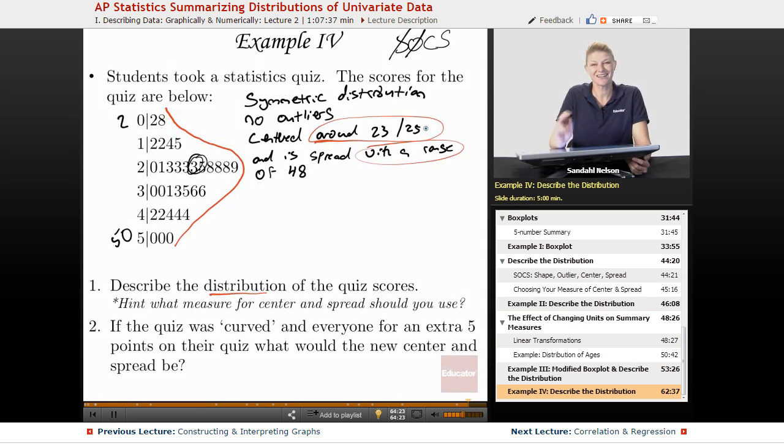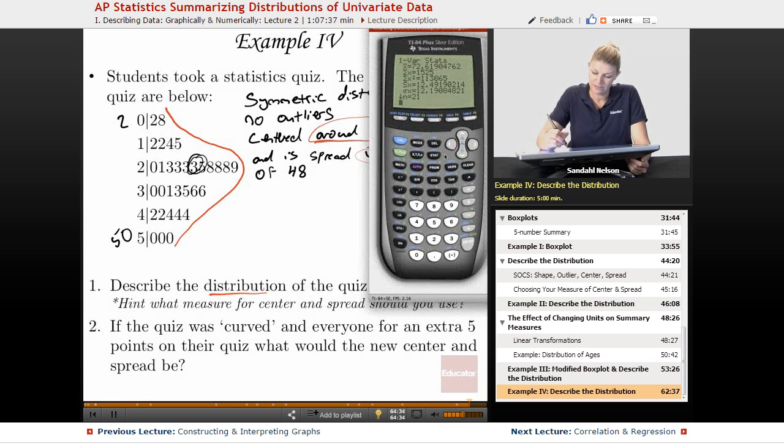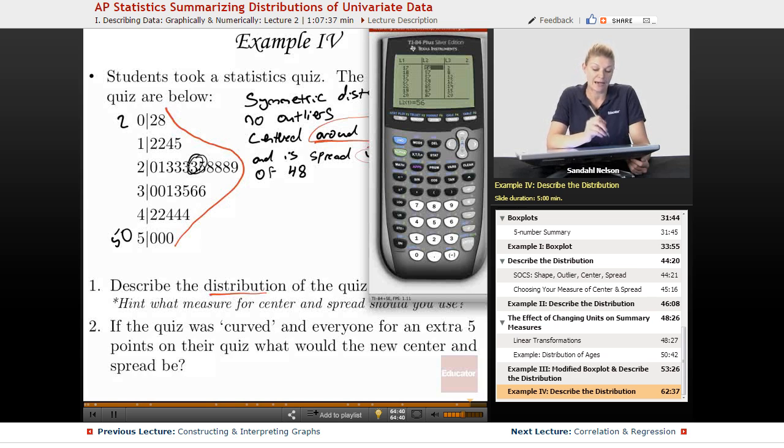We're not just going to say it looks like it's around here. We're not just going to say the range is this. Now we can calculate the mean and the standard deviation. So I'm going to pull up my calculator. Remember, the stem-and-leaf plot is cool because it not only gives you a graph, but it also gives you the actual values. So I'm going to put the actual values in my calculator, which I've already done. I want you to pause and put these into your calculator and figure out the center and spread.